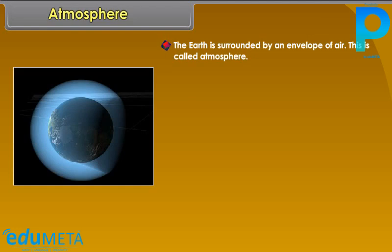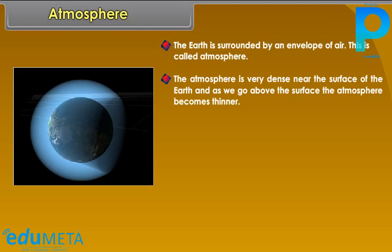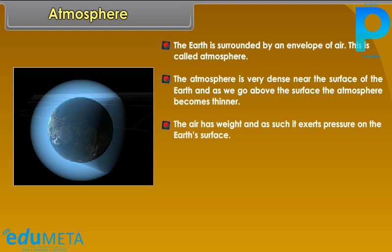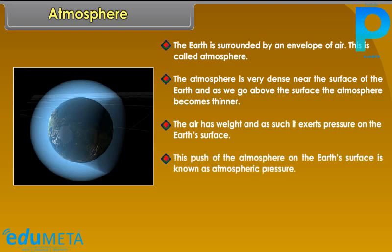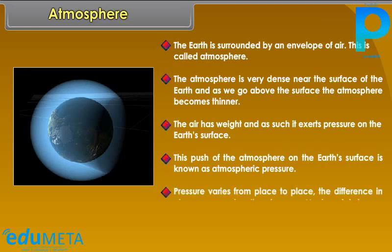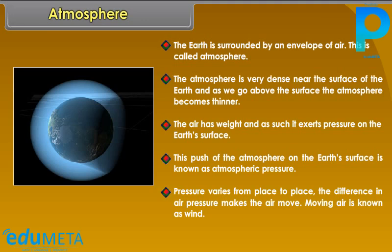The earth is surrounded by an envelope of air called the atmosphere. The atmosphere is very dense near the surface of the earth, and as we go higher, it becomes thinner. The air has weight and exerts pressure on the earth's surface, known as atmospheric pressure. Pressure varies from place to place, and the difference in air pressure makes the air move. Moving air is known as wind.